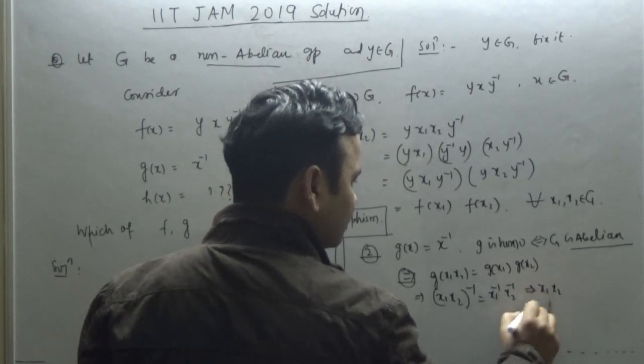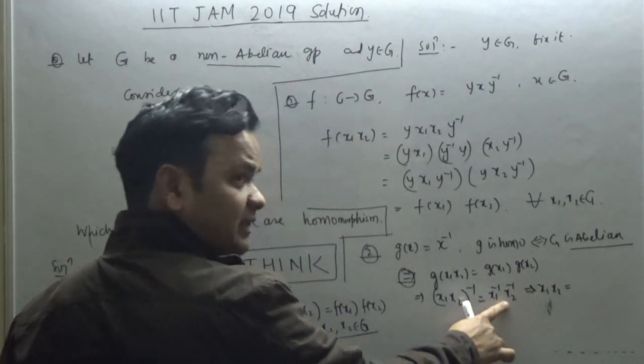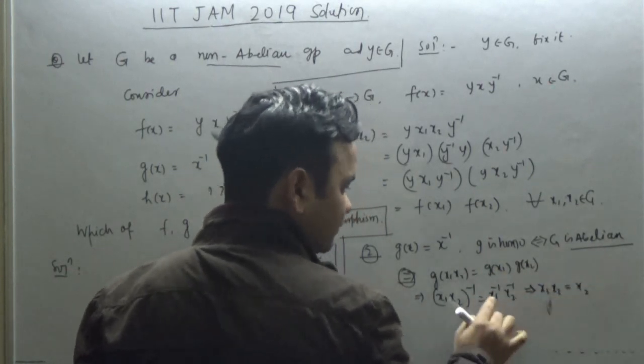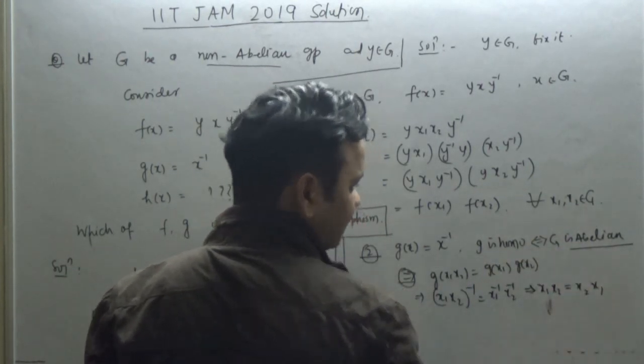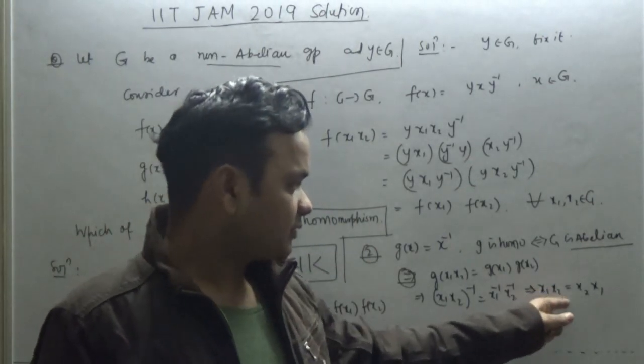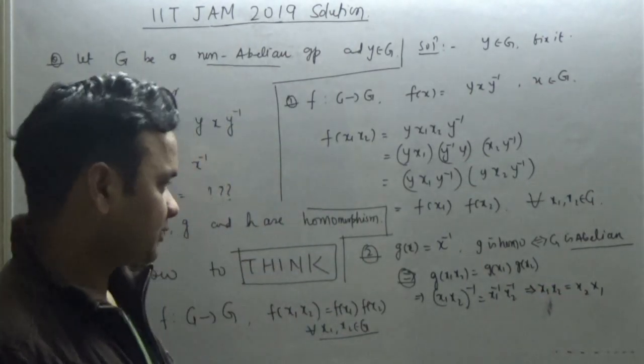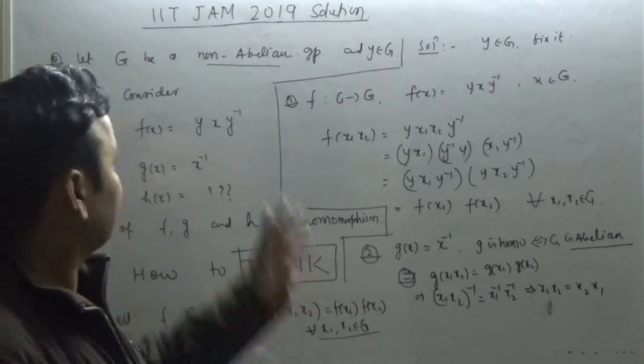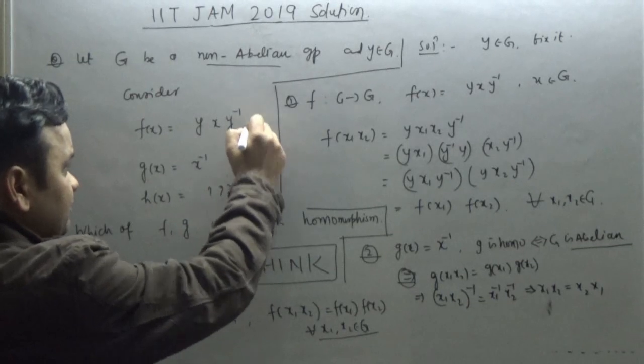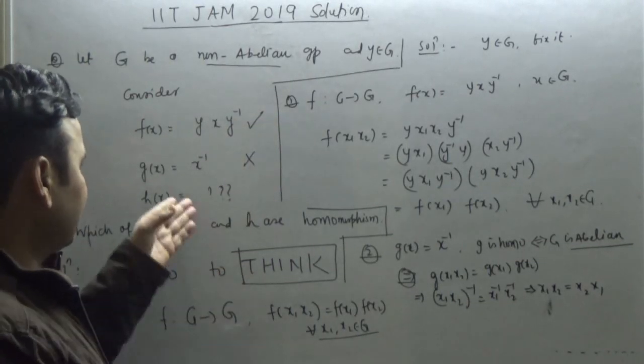This is ab inverse by the socks theorem: ab inverse is nothing but b inverse a inverse. If you take the inverse again, there is nothing but x1 x2, and if you take the inverse again, there is nothing but x2 and x1. This holds for all x1, x2, so x1 x2 equals x2 x1, so my group is abelian. But what you have given, the group is non-abelian, so this is not a homomorphism.